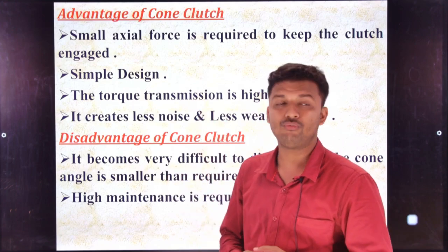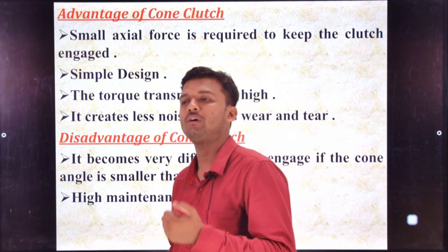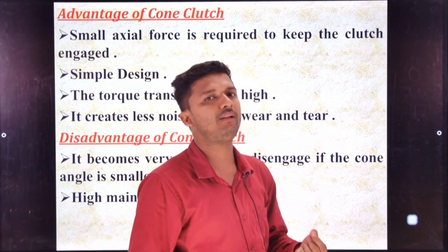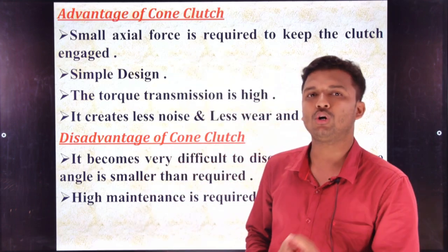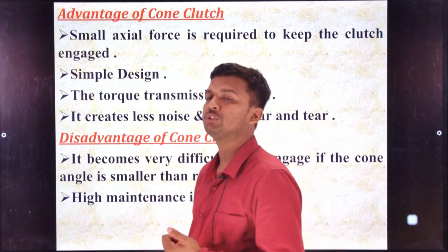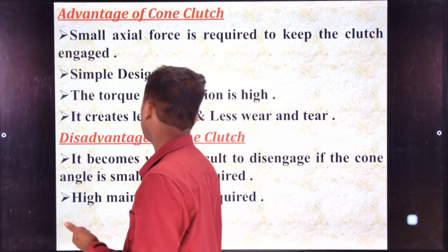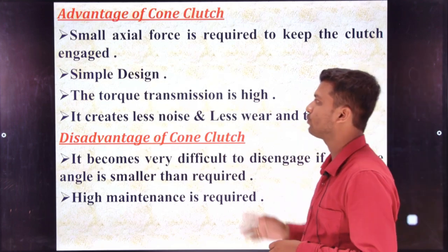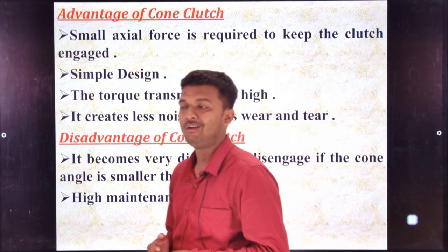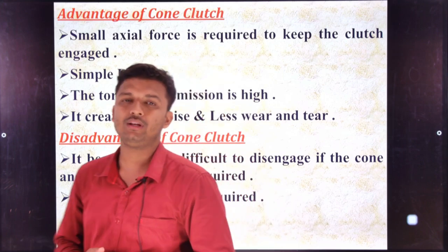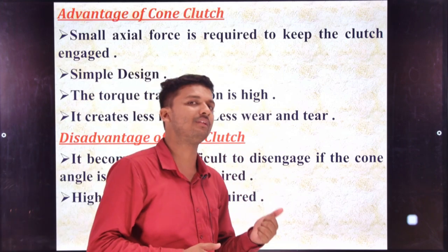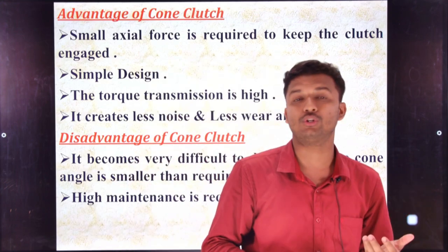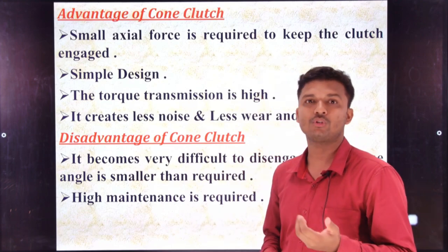Next is simple design — it is a very simple design compared with the multi plate or single plate clutch, because the cone type design gives much more torque compared with previous clutch systems. Next is torque transmission: the torque transmission is high, which is a great advantage. The torque transmission here is much more comparable with multi plate and single plate because the surface area of the cone is much larger.